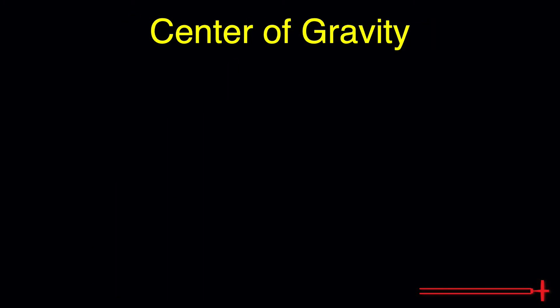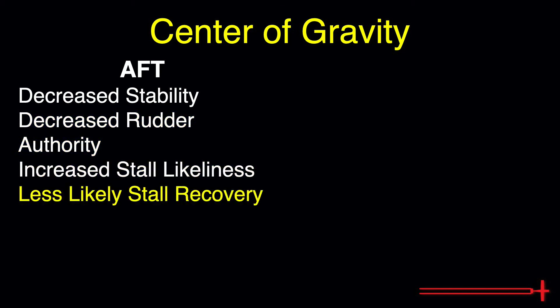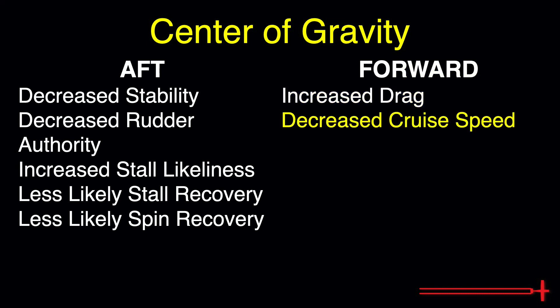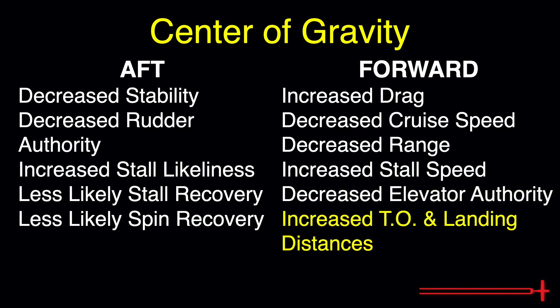Let's summarize everything we've gone over in this video. The disadvantages of a CG too far aft are decreased aircraft stability and decreased rudder authority. This combination leads to increased possibilities of stall and decreased stall and spin recovery capabilities. The disadvantages of a CG too far forward are increased drag leading to decreased cruise speed and range, increased stall speed, and decreased elevator authority leading to increased takeoff and landing distances.